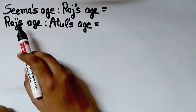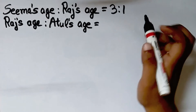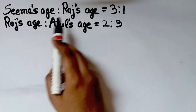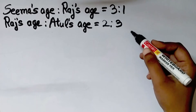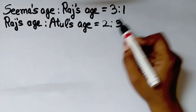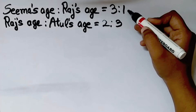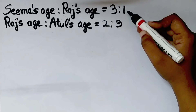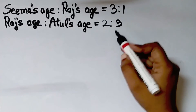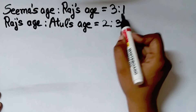Now for Example 2, it is given that the ratio of Sima's age to Raj's age is 3 is to 1, and the ratio of Raj's age to Atul's age is 2 is to 3. We have to find the ratio of Sima's age to Raj's age to Atul's age. But here, the second term of the first ratio and the first term of the second ratio are different. In the first ratio, the value of Raj's age is 1, and in the second ratio the value of Raj's age is 2. So we cannot directly write the ratio of 3 numbers — we have to make these values the same.